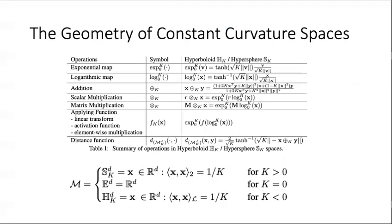As the mixed-curvature translational distance model is constructed by multiple constant curvature spaces, we first introduce the constant curvature translational distance model. Here is the geometry of the constant curvature space. We can see that the vector and matrix operations of the hyperbolic and spherical space are different from Euclidean space.